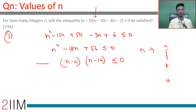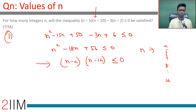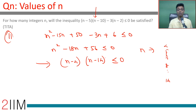It's a quadratic equation with two positive roots and it should be less than or equal to 0, so n should lie between the two positive roots — between 4 and 14. How many integers are there between 4 and 14, including 4 and 14? We include the endpoints because there's a 'less than or equal to 0' condition.